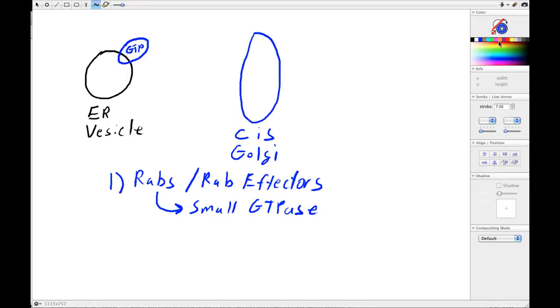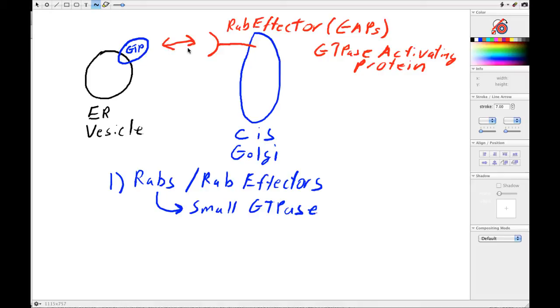And they have a RAB effector, which I'll draw in red, which is like a catcher's mitt that acts as a docking mechanism. And these also act as GAPs, so those are GTPase activating proteins. And what that means I'll go into in a second. But this, in some sense, is a molecular handshake. The RAB interacts with the RAB effector, and that allows a first pass at knowing whether the vesicle is tethered to the right compartment.